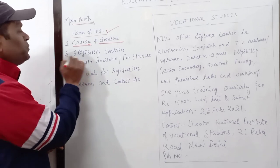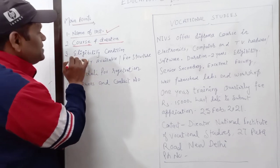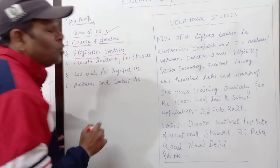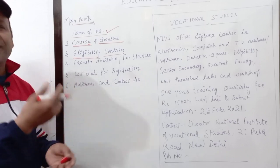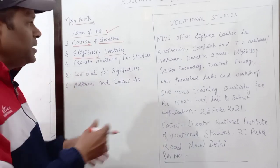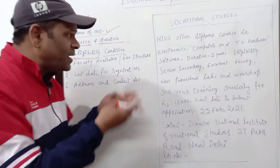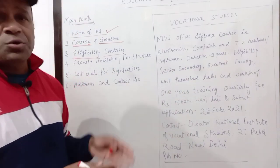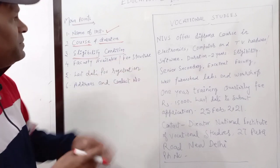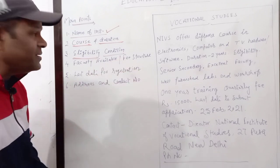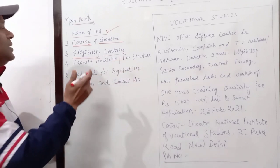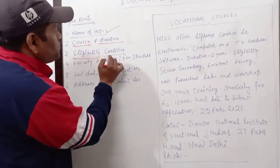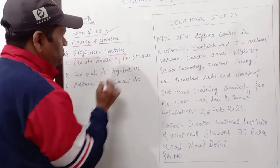Then comes the third point: eligibility criteria. This is for the candidate. Those who are willing to participate or get admitted in that course — their eligibility criteria should be mentioned.